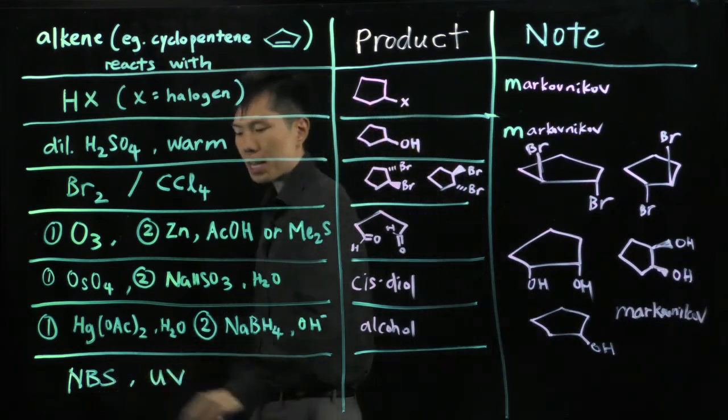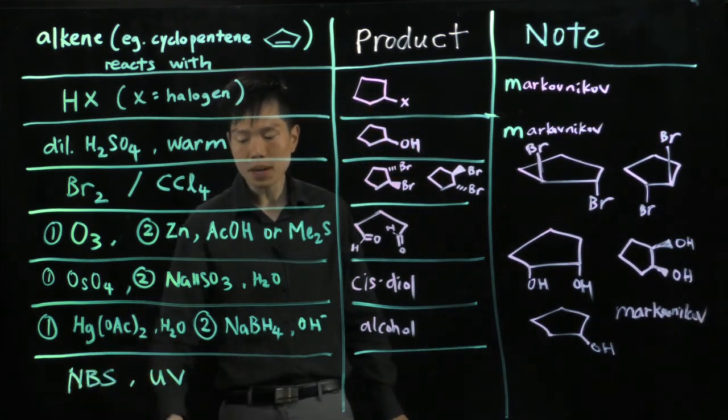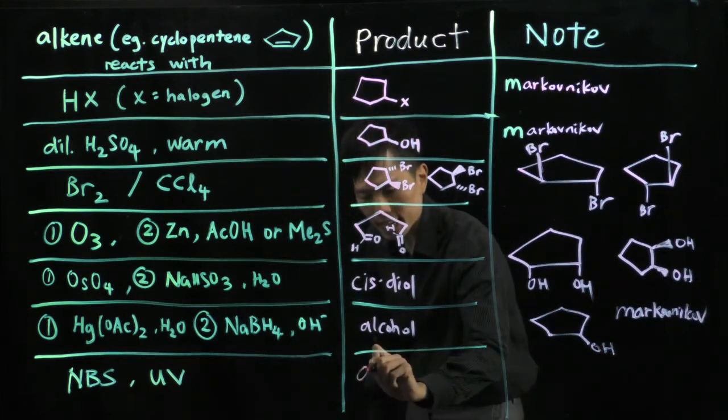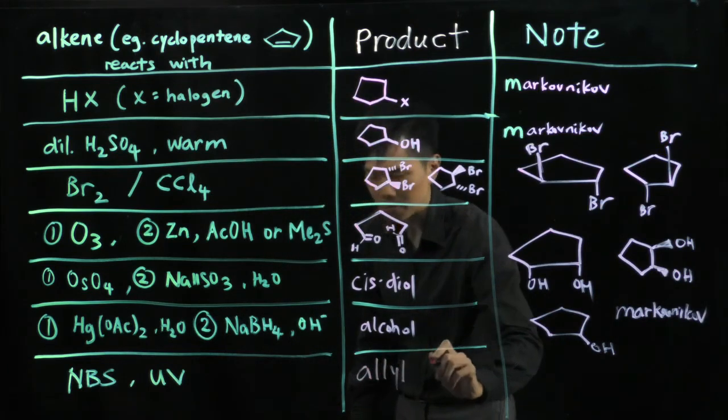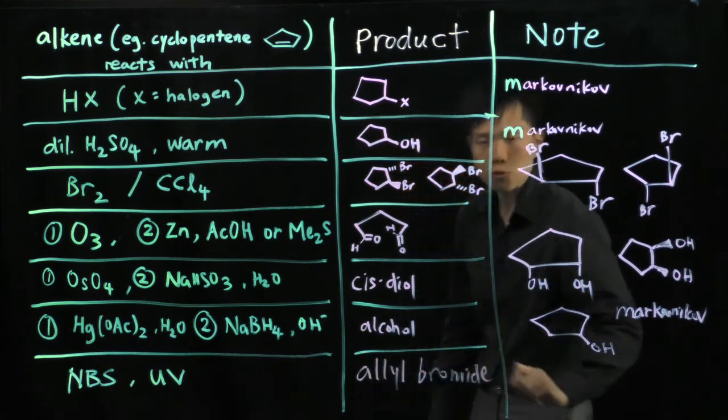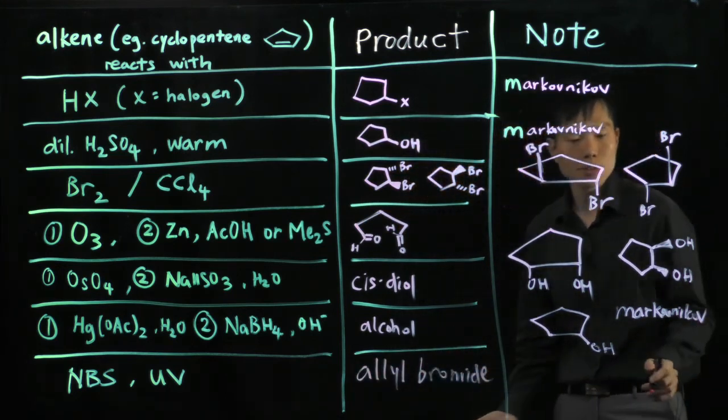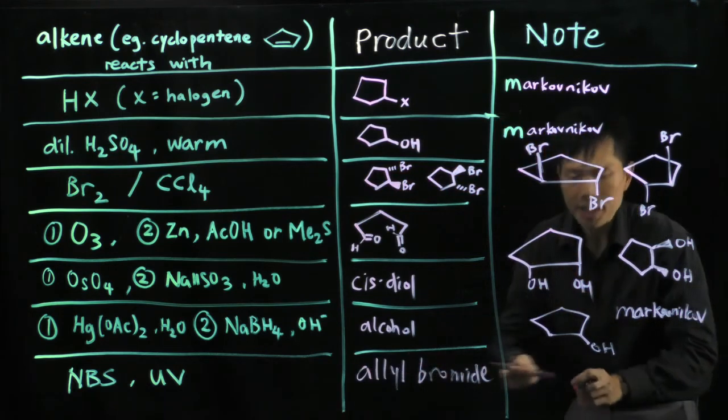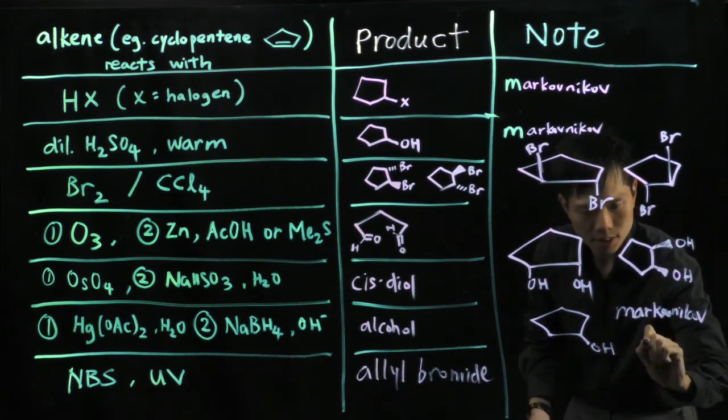In the last case, NBS stands for N-bromosuccinimide. In the presence of ultraviolet ray, you will get an allylic bromide. The allylic group would be the carbon next to the C-C double bond. So in this case, it's rather special. You do not break the C-C double bond.